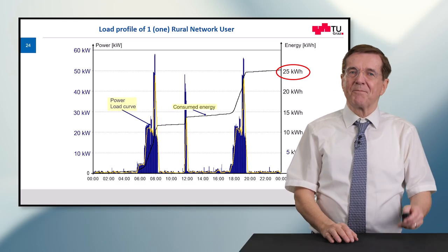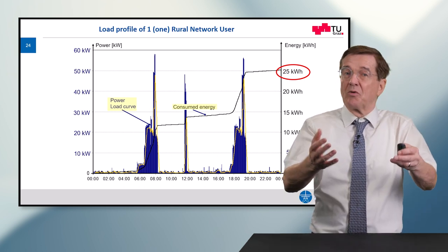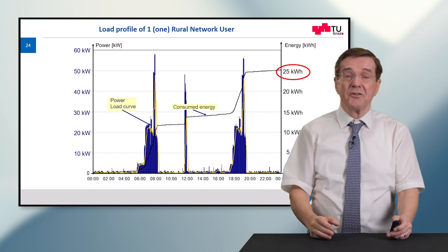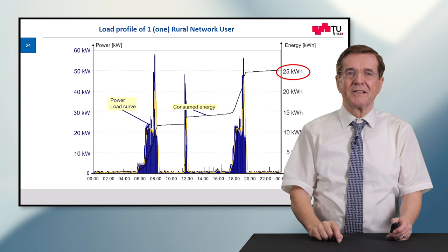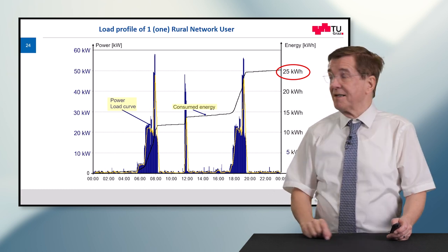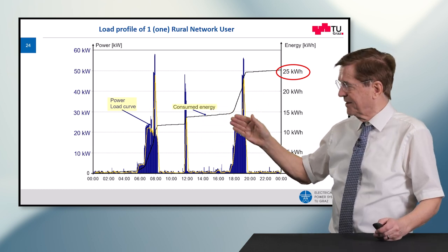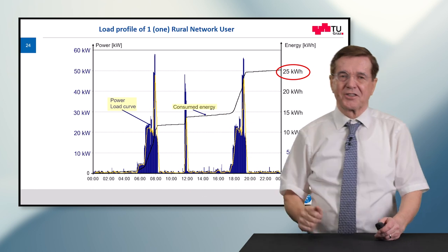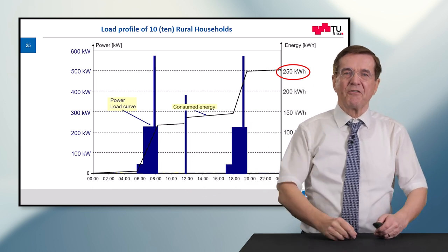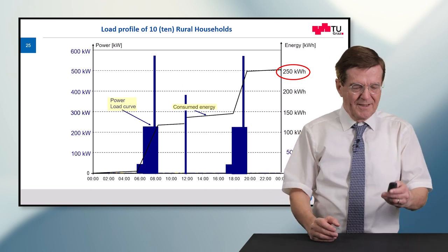Now let's look at an application of this rule — how can we manage if the peak load goes up and we have a limited line? This is a real measurement from a rural network user, a farm with cows. In the morning and evening the cows are milked and the milk is cooled down — this needs energy. At lunch time people have lunch. So now let's see what happens if we extend this to 10 more or less identical rural households.